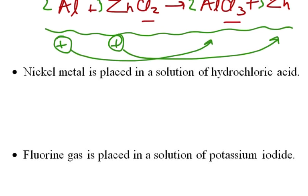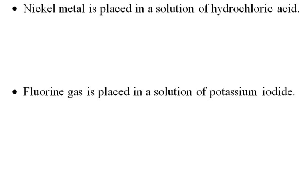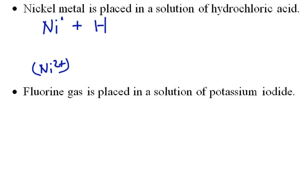Second reaction: nickel metal is placed in a solution of hydrochloric acid. We write nickel metal as Ni neutral. Nickel turns into Ni²⁺, so because it becomes a positive ion, it's going to replace the positive ion in our reactants. Hydrochloric acid is HCl, so it's the H that's going to get replaced.